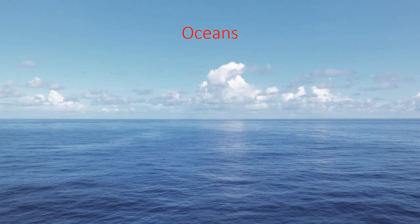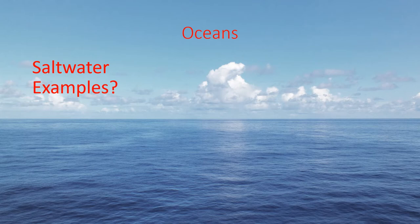Hello Earth Science students, here is our lesson on water distribution, meaning where all the water is located on the earth. Let's begin with oceans. Oceans are made of saltwater — it's saline, it has salt dissolved in it.